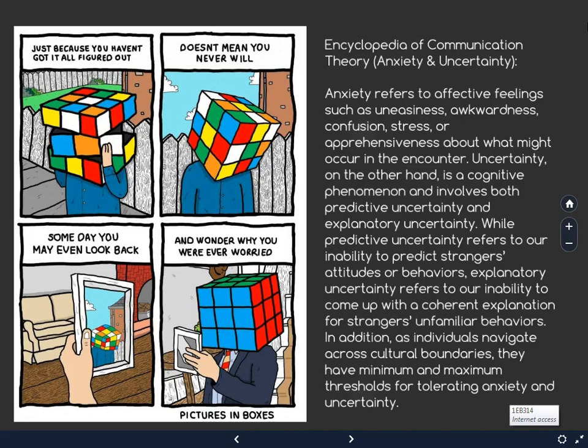What you see here is the encyclopedia entry for Communication Anxiety and Uncertainty according to the Encyclopedia of Communication Theory. It states that anxiety refers to affective feelings such as uneasiness, awkwardness, confusion, stress, or apprehensiveness about what might occur in the encounter. By 'affective,' the entry means that the effects of communication apprehension deliberately influence our emotions, and communication apprehension affects us not just during moments of severe stress or anxiety, but prior to.